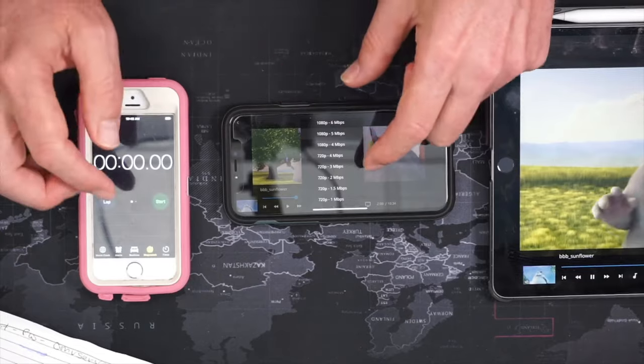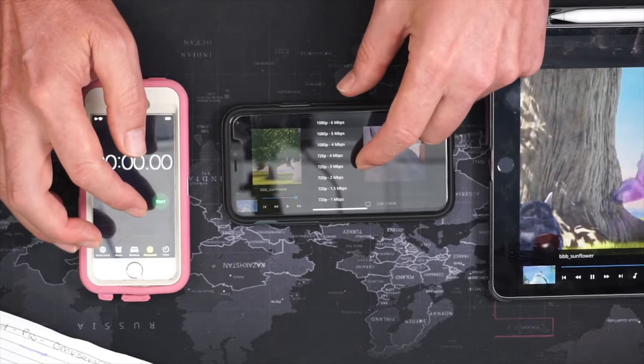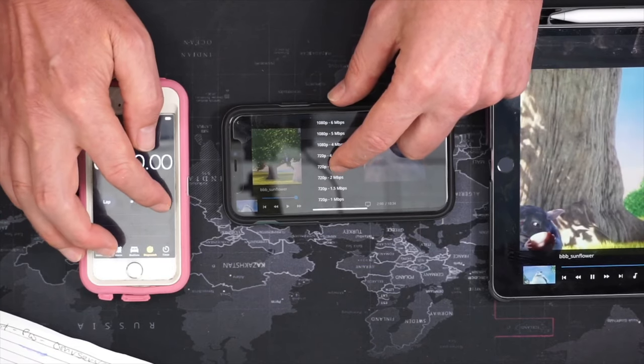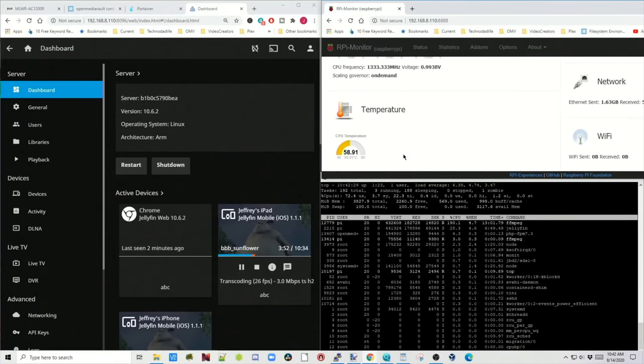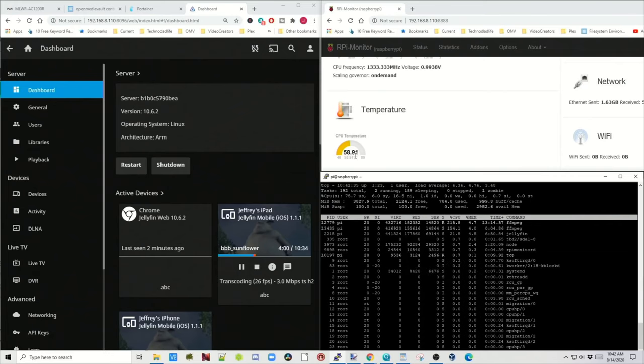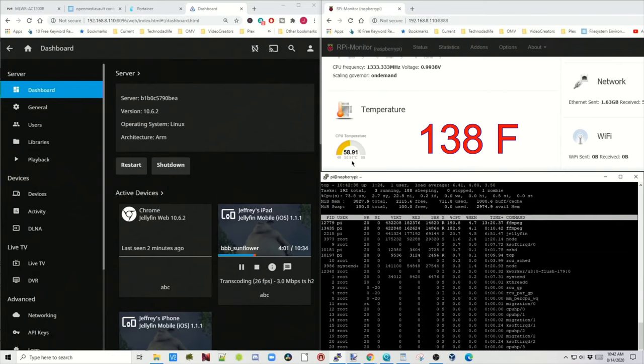So let's try transcoding with two devices. This one's at 720p 3, just like the iPad is. We're going to press start. If we look at our desktop, you can see immediately our CPU usage went up to 74, 75. Our temperature went up by 4 degrees almost immediately.